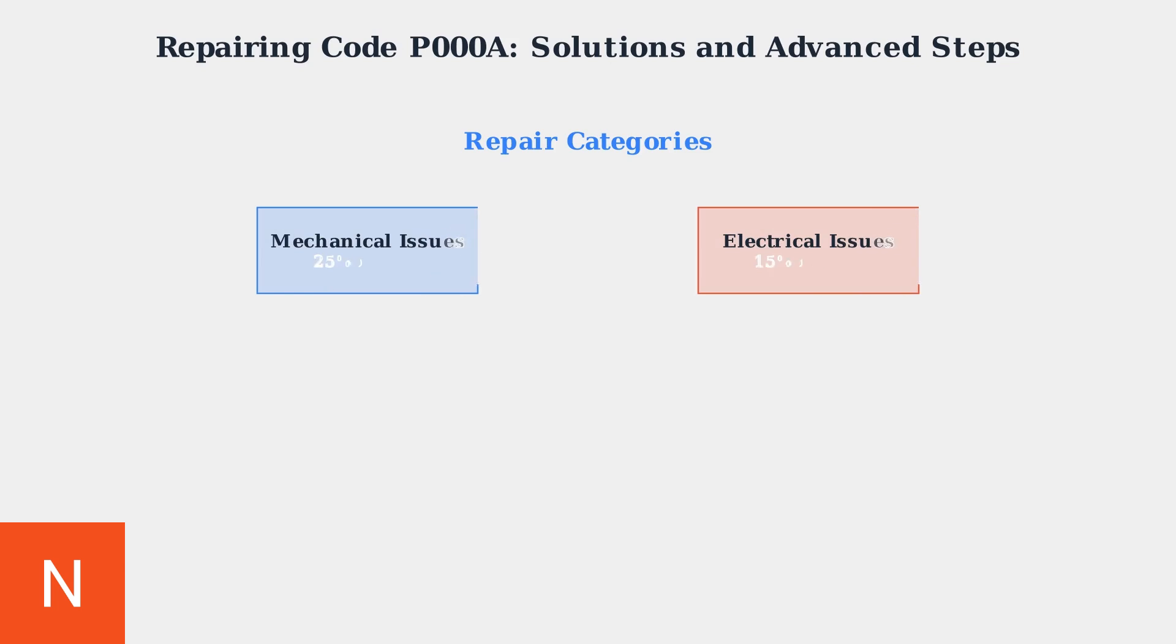When oil-related issues are ruled out, we move to mechanical and electrical repair solutions. These represent the remaining causes of code P000A and require specific diagnostic and repair approaches. Mechanical component failures account for 25% of P000A cases, while electrical issues represent 15%. Each category requires different diagnostic and repair approaches.